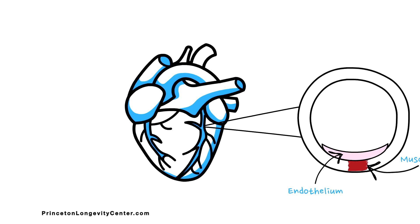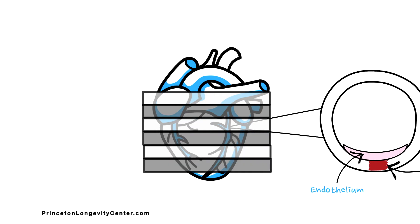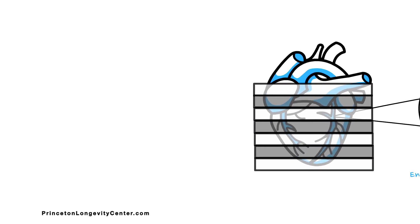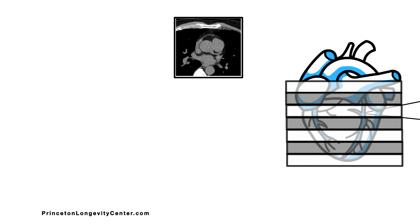When a coronary calcium score is performed, we take roughly two millimeter slices of your heart using a CT scanner. This enables us to see your heart and coronary arteries in enough detail to easily detect calcium.